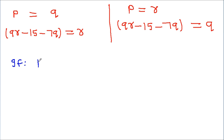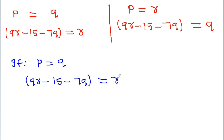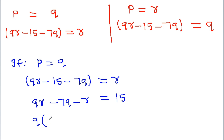Now if p = q, then we have qr - 7q - r = 15. Taking q common, we get q(r - 7) - r = 15. To factor this, we need r - 7.